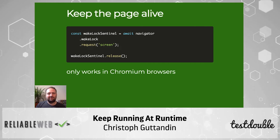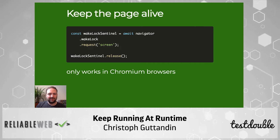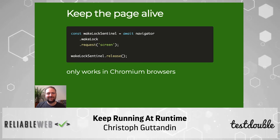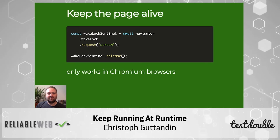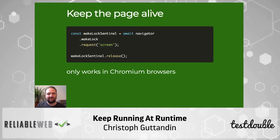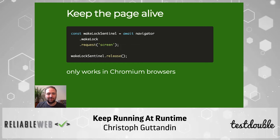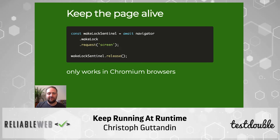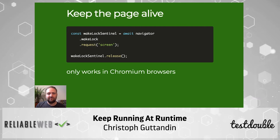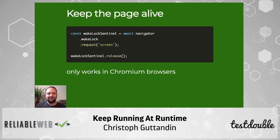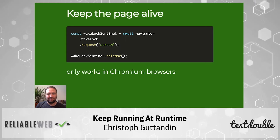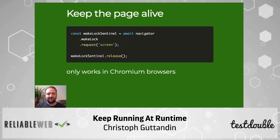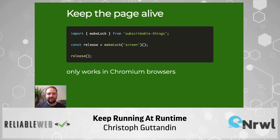So far we've only talked about ways to track runtime performance issues and help the browser render more efficiently. But sometimes you explicitly want the opposite — because the browser can sometimes be too aggressive and throttles or stops your page when you don't want it to. One way to prevent this is the Wake Lock API, now available in Chrome, which allows us to lock the screen. This is very helpful especially on smartphones or laptops that tend to lock or dim the screen early, and if your application needs to keep the screen awake longer, you can use this API. There is also a wrapper for this in subscribable-things.